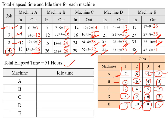Next, we calculate the idle time for each machine. For machine A, observe the in-time and out-time for all jobs — it processes continuously from 0 to 26 with no waiting. Total machining time = 26 hours. Idle time = 51 − 26 = 25 hours.